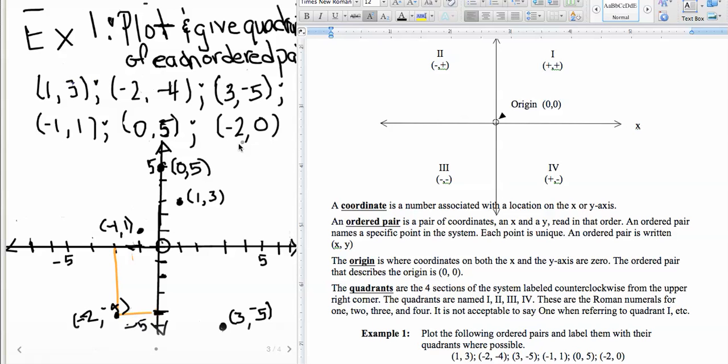And this one is on the x axis because I see a negative 2 in the x position and a 0 in the y position. That tells me that I have something on the x axis.